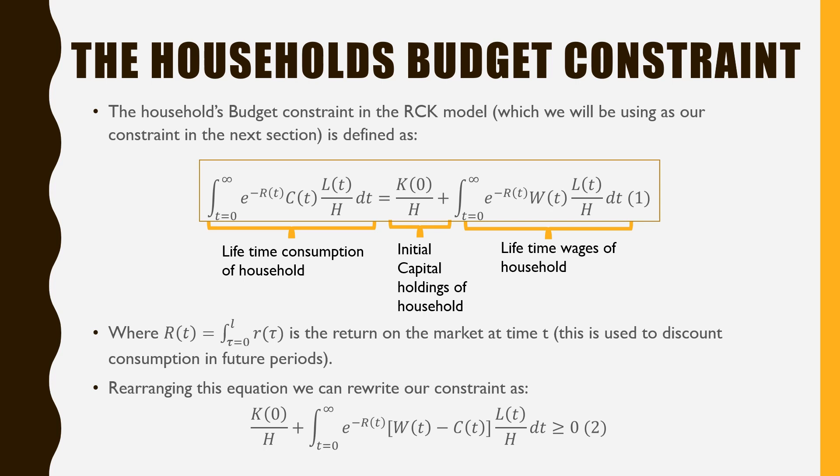Rearranging this equation, we can rewrite our constraint as: the initial capital holdings of the household minus the lifetime consumption of the household must be greater than or equal to zero.